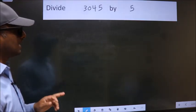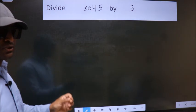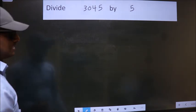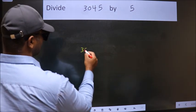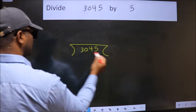Divide 3045 by 5. To do this division, we should frame it in this way. 3045 here, 5 here.